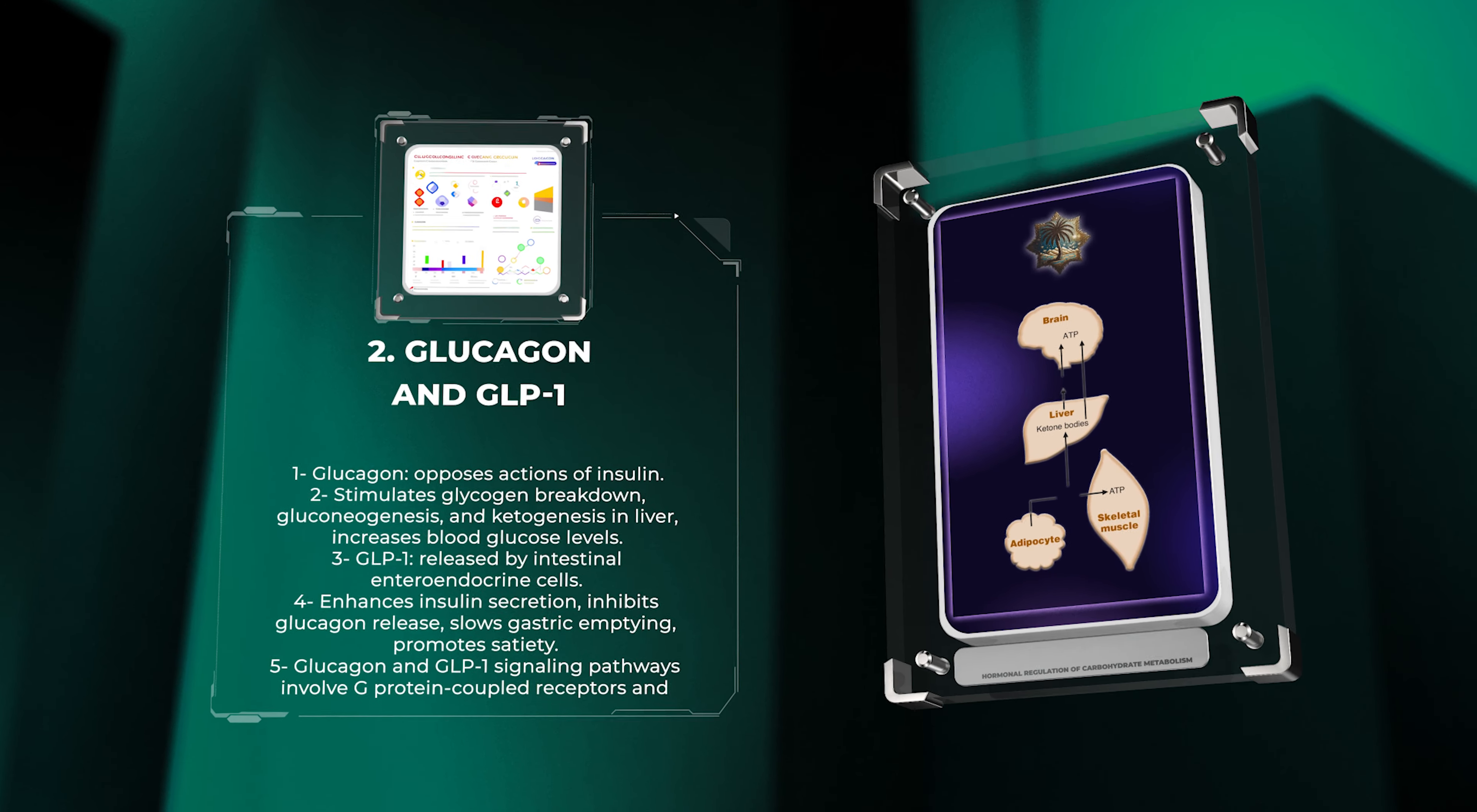These responses include increased heart rate, elevated blood pressure, bronchodilation, and glycogenolysis. The intricate adrenergic signaling pathways involve cAMP generation, protein kinase activation, and calcium mobilization.